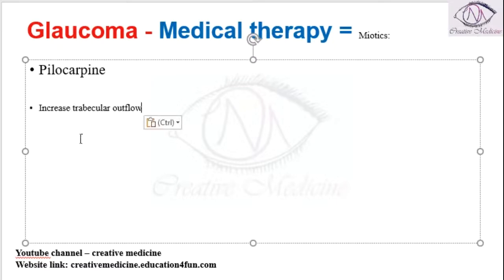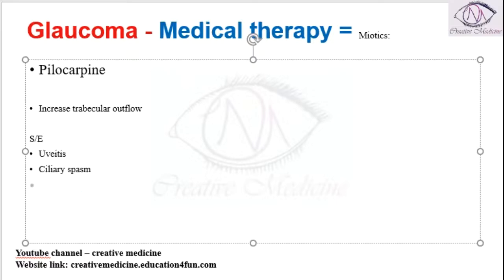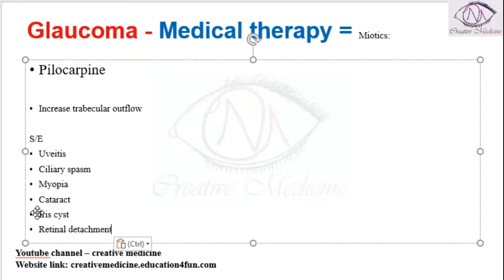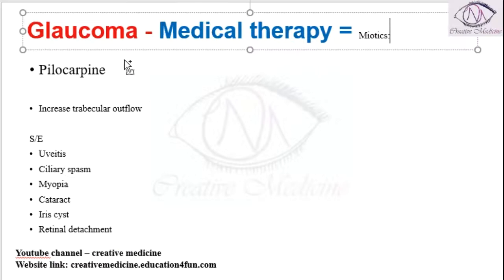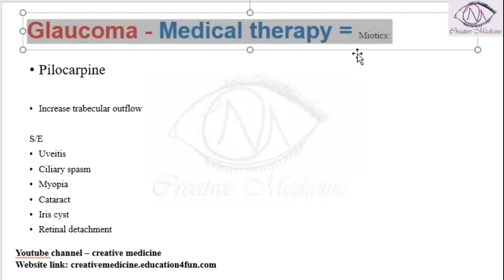Pilocarpine will increase the trabecular outflow. The side effects of pilocarpine include uveitis and ciliary spasm, as well as myopia, cataract, iris involvement, and retinal detachment, which can occur when miotics are used for the treatment of glaucoma.